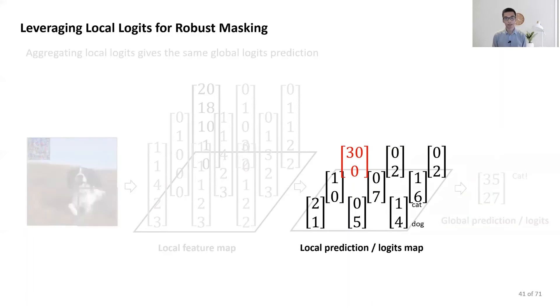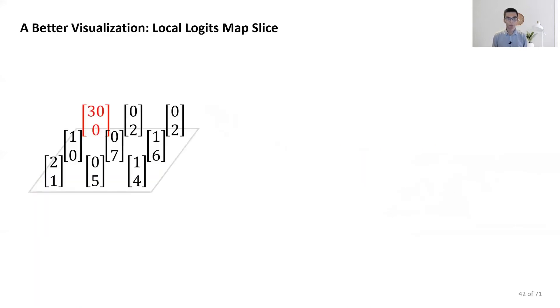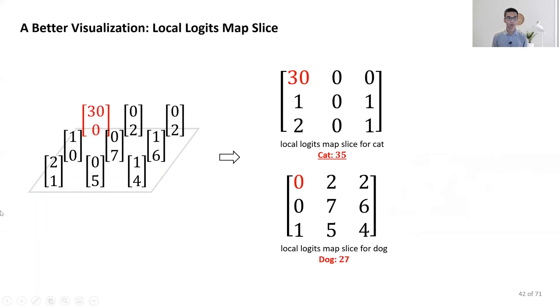Then, our robust masking is operating on the local logits map. Here, we change the visualization from 3D to 2D. We move the top 3 by 3 elements to a 3 by 3 matrix and the bottom one to another matrix. Here, because we are using the local logits map, we will know each slice of this map corresponds to one class. And we call the elements of each slice the class evidence for that particular class.